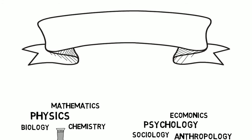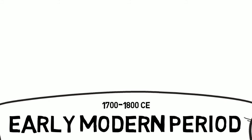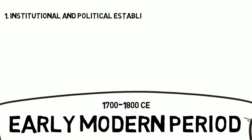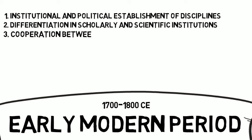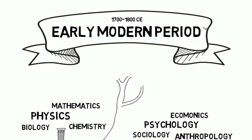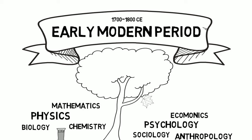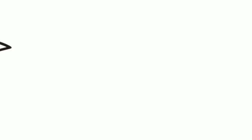Following these two important time periods is what was called the early modern period, around the 16th to 17th century. This period was characterized by: one, institutional and political establishment of disciplines; two, the differentiation in scholarly and scientific institutions; and three, cooperation between disciplines. It is argued that simplicity was lost as the tree became more bifurcated, representing specialization, as the problems society faced grew more complex.